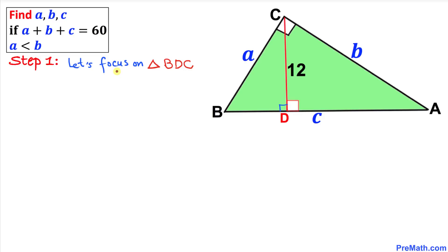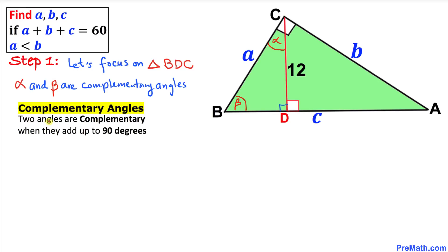Here's our very first step. Let's focus on triangle BDC — we know that this angle is 90 degrees. Let me call this angle beta and this angle alpha. We know that the sum of the angles of any triangle is 180 degrees, and since one angle is 90, alpha and beta are complementary angles. Two angles are complementary if they add up to 90 degrees.